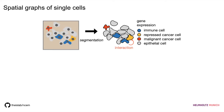You might obtain a more granular annotation, differentiating repressed cancer cells from malignant cancer cells, and additionally immune cells. For this example, there might be an interaction between immune cells and cancer cells, causing a repression of specific phenotypes in cancer cells. You might want to analyze how strong this inhibition of certain receptors or ligands is, and really quantify the importance of these interaction patterns.